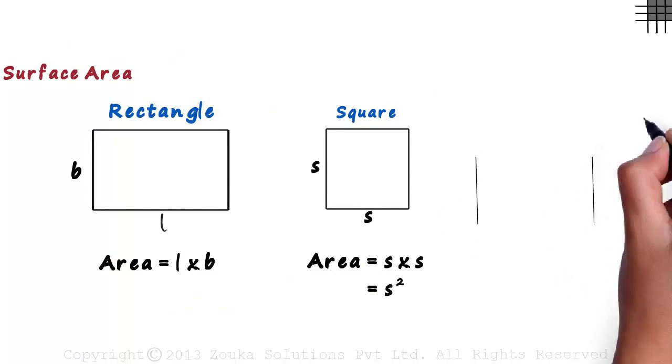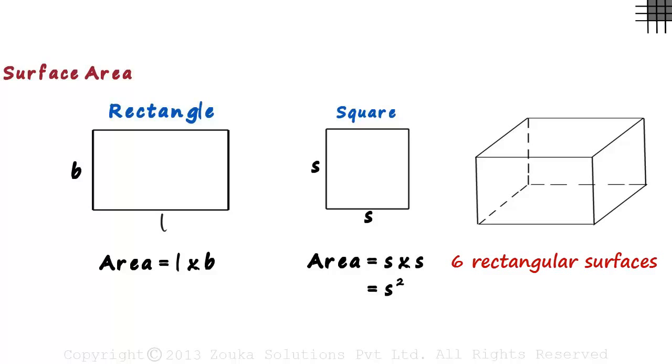Now look at this three dimensional box. How do we find its surface area? The surface area of a shape is the area its surface covers. If you look carefully, you will see that it is covered by six rectangular surfaces.